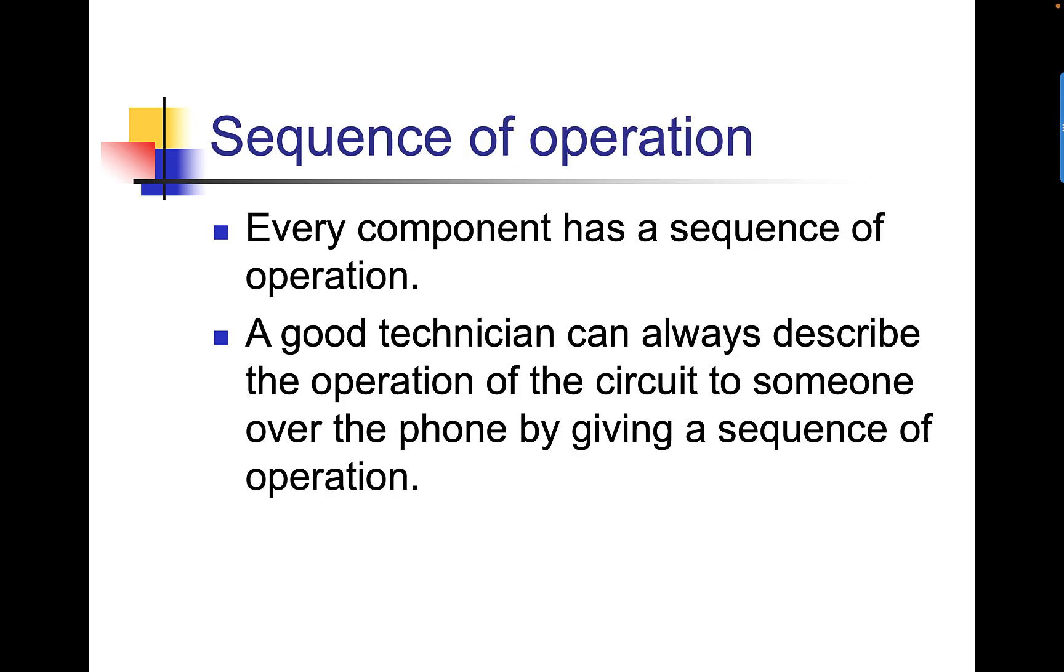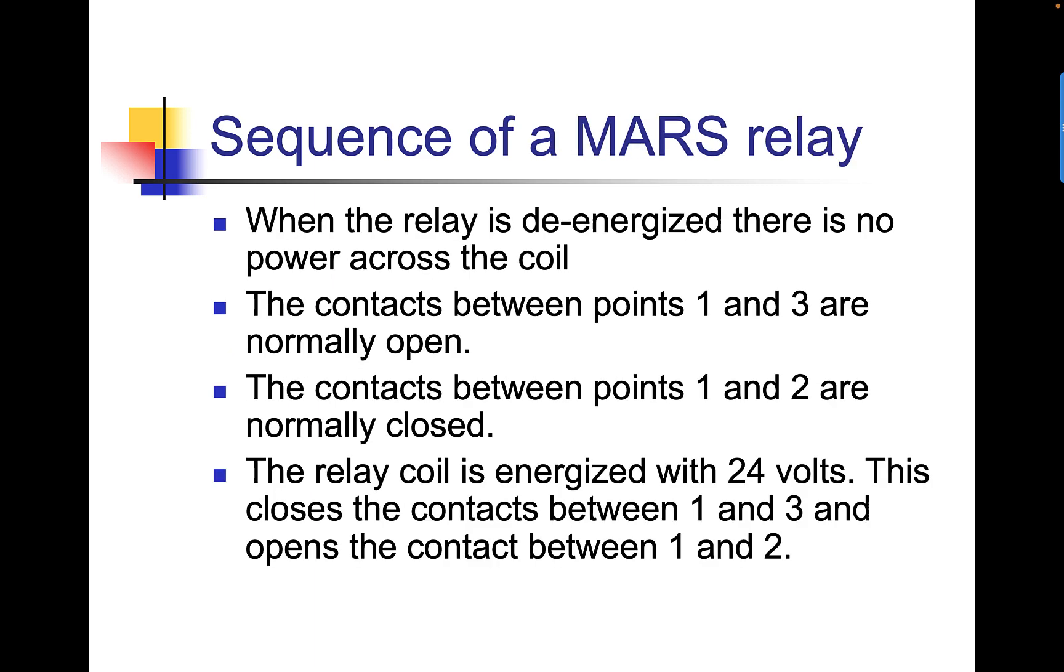Every component has a sequence of operation. A good service technician can always describe the operation of a circuit to somebody over the phone by giving a sequence of operation. When the relay is de-energized, there's no power across the coil. The contacts between points 1 and 3 are normally open. The contacts between points 1 and 2 are normally closed. The relay coil is energized with 24 volts. This closes the contacts between 1 and 3, and opens the contacts between 1 and 2.